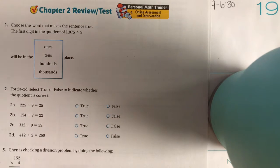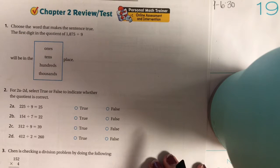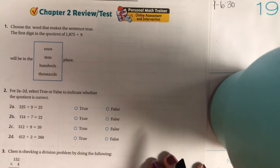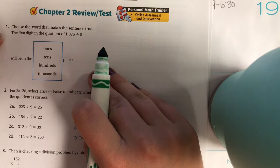This is the chapter 2 study guide. I'm going to go step by step through each question. Number 1 is choose the word that makes the sentence true.